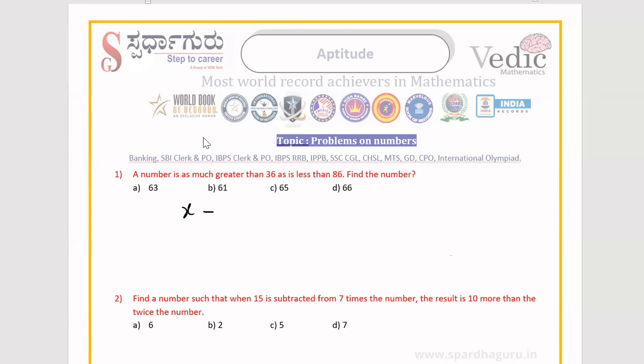So x minus 36. X is greater than 36 is means equals less than 86, so x the number x is less than 86, 86 minus x. Take x terms into LHS and constant numbers into RHS, so x plus x is equal to 86 plus 36. 2x is equal to 122, so x value is 61. Option B is the right answer.